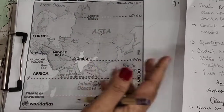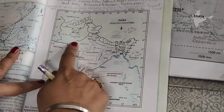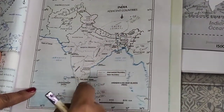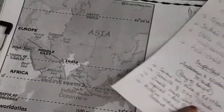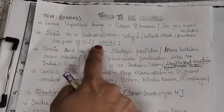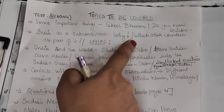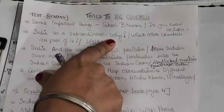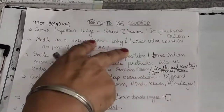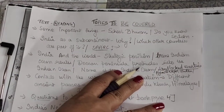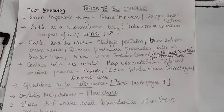India alone is not called a subcontinent — there are other countries that together form the Indian subcontinent: Pakistan, Nepal, Bhutan, Bangladesh, Maldives, and Sri Lanka, all together with India. When we talk about SAARC — South Asian Association for Regional Cooperation — it is an intergovernmental organization where all south Asian countries work together for economic growth, and their motto is to promote peace, friendship, and trust. You can read more about SAARC if you're interested.